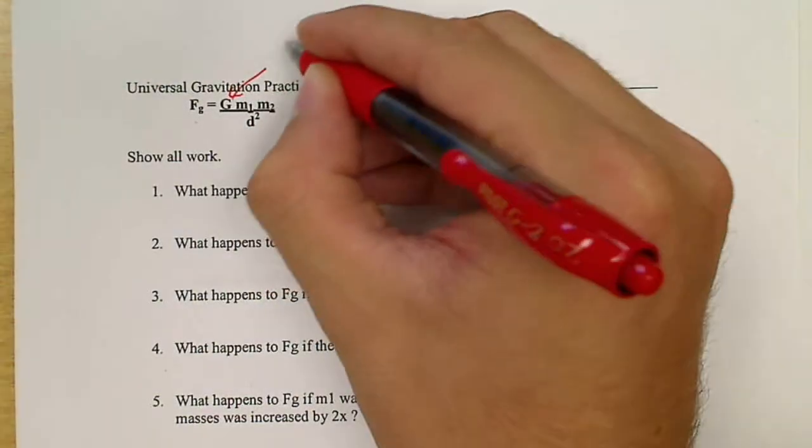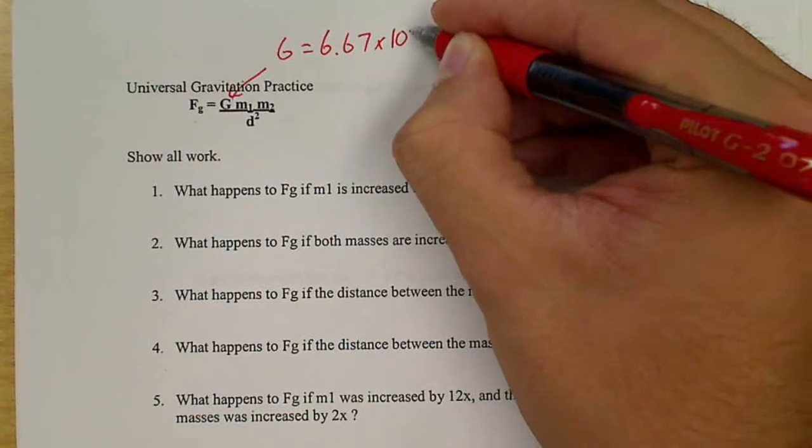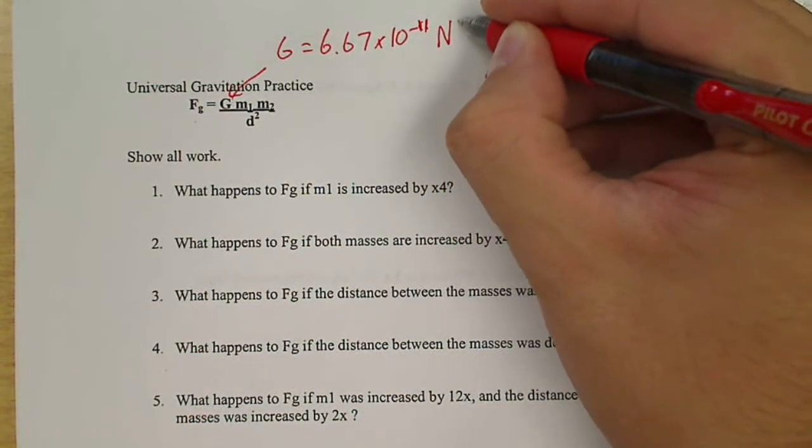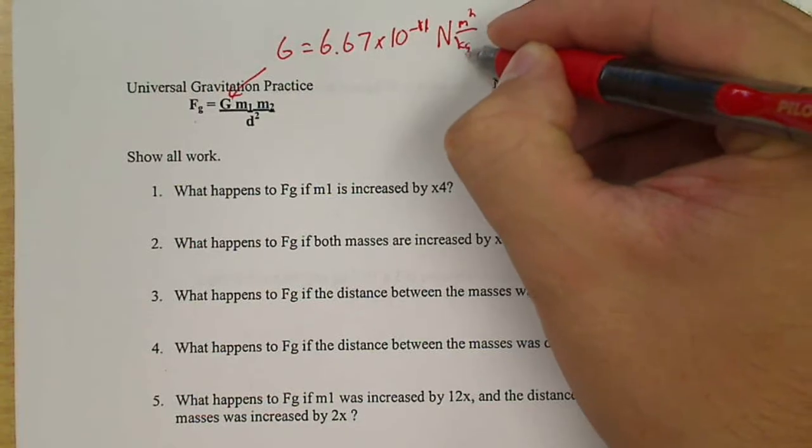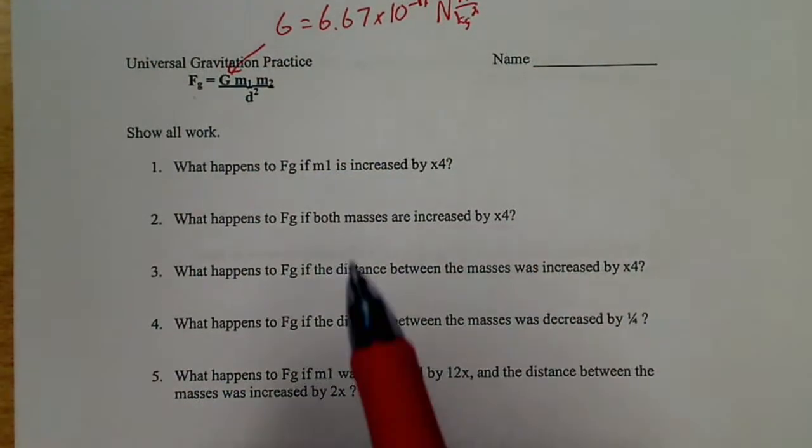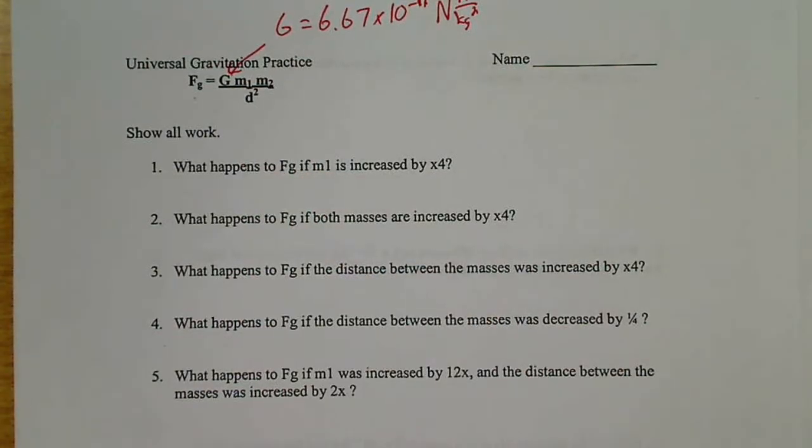Now this constant G equals 6.67 times 10 to the negative 11th newton meter squared per kilogram squared. This is a constant we'll always use that number. M1 and M2 is the first and second mass, and D is distance squared.